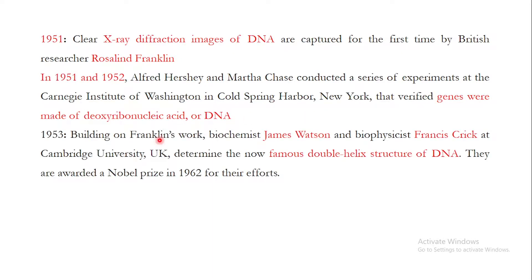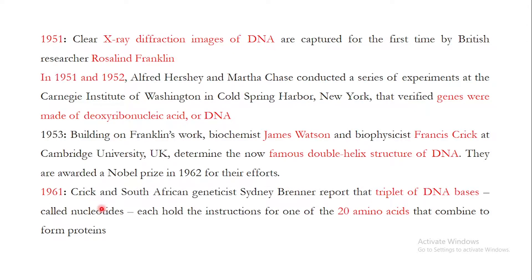In 1953, the famous double helix structure of DNA was revealed by James Watson and Francis Crick, and because of this great discovery they were awarded the Nobel Prize in 1962. In 1961, Crick and South African geneticist Sydney Brenner reported that triplets of DNA bases — called nucleotides — form codons, and each codon holds the instructions for one of the 20 amino acids that combine to form proteins.